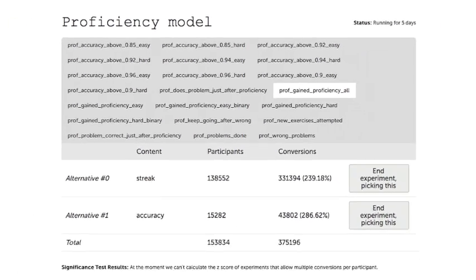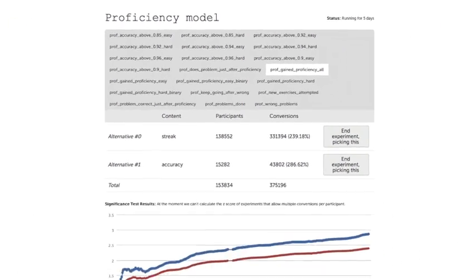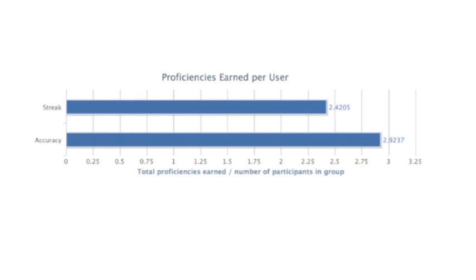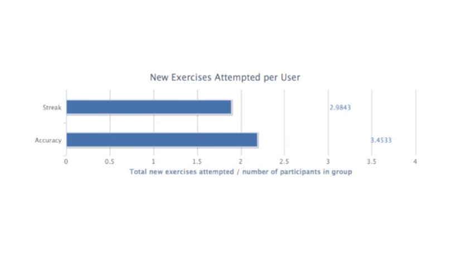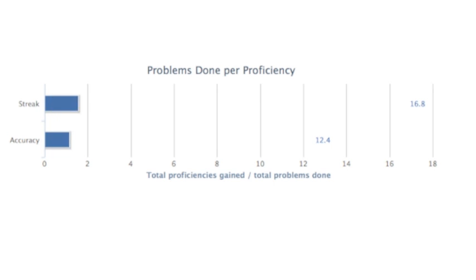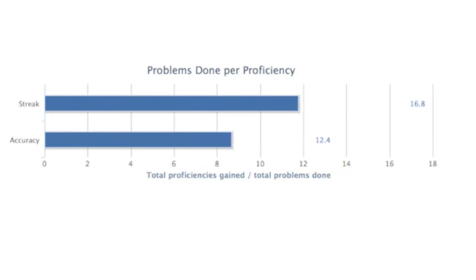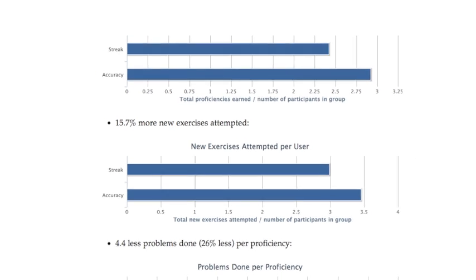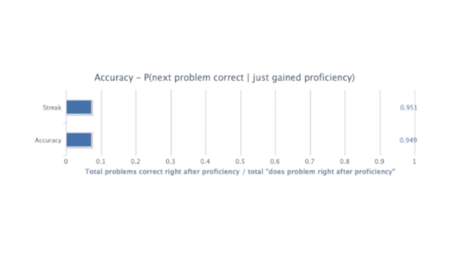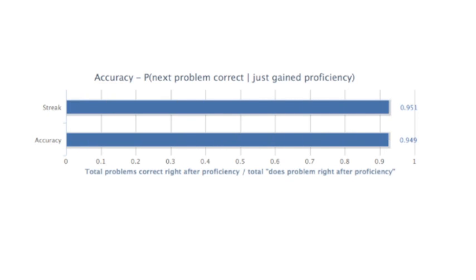For two weeks, we tested on 10% of users and found that the new model had 21% more proficiencies, 16% more exercises attempted, and a reduction from about 17 problems done per proficiency to 12. But do we lower the bar for proficiency? It turns out that for both models, accuracy is 95% after proficiency.